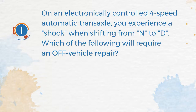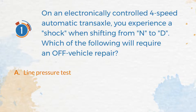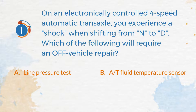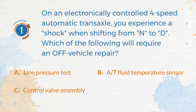Number 1. On an electronically controlled 4-speed automatic transaxle, you experience a shock when shifting from N to D. Which of the following will require an off-vehicle repair? A. Line Pressure Test. B. Auto Transmission Fluid Temperature Sensor. C. Control Valve Assembly. D. Forward Clutch.